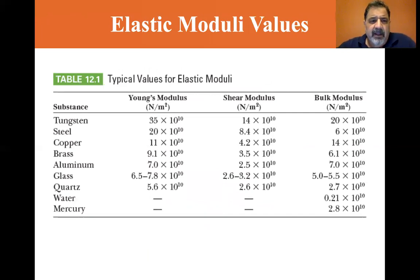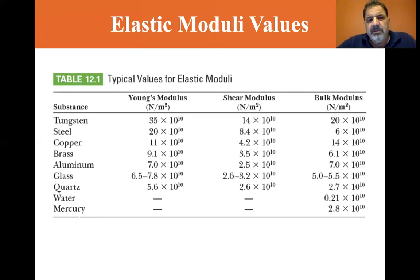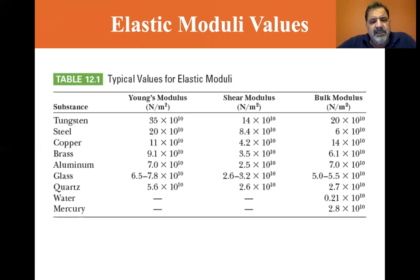Here are some typical elastic moduli. It looks like they're ranked from strong to weak. Tungsten is 35 × 10¹⁰ N/m², steel is 20 × 10¹⁰, copper is 11 × 10¹⁰, brass is 9.1, aluminum is 7. So tungsten is about five times as great as aluminum. Glass is between 6.5 and 7.8, quartz is 5.6. Water and mercury appear later in the bulk modulus column.